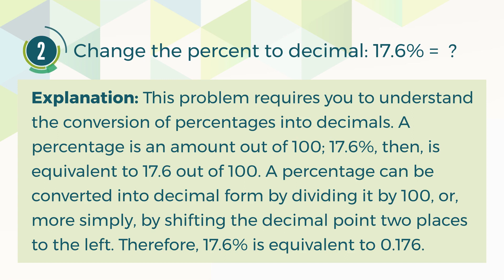A percentage can be converted into decimal form by dividing it by 100, or more simply, by shifting the decimal point two places to the left. Therefore, 17.6% is equivalent to 0.176.